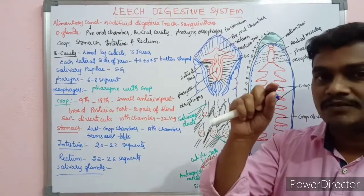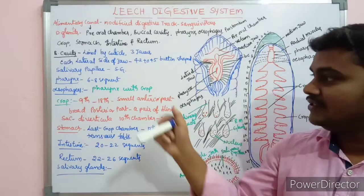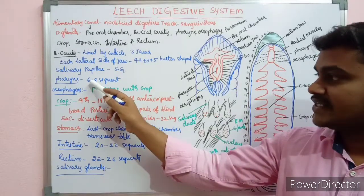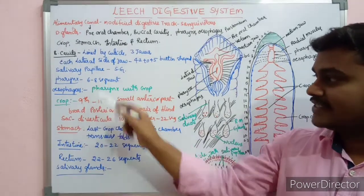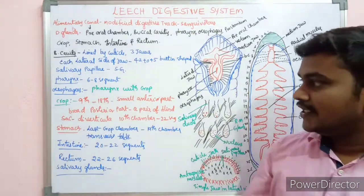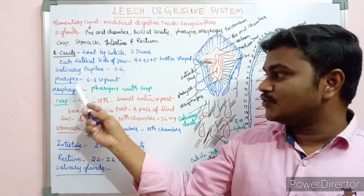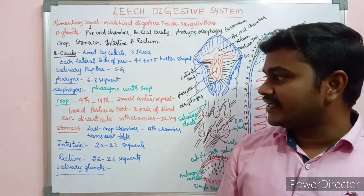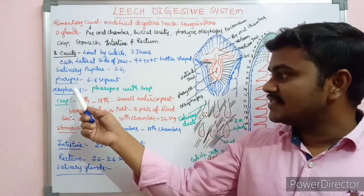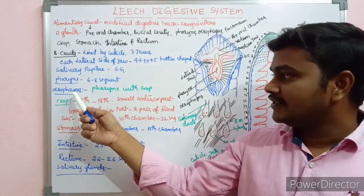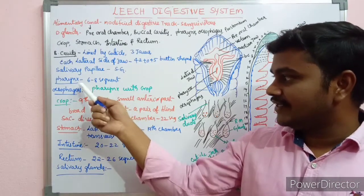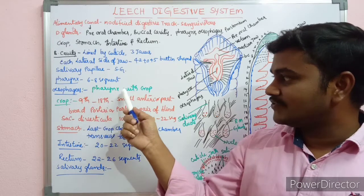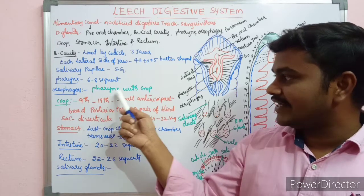The pharynx is a small, minute region. It is located in segments 6 to 8. The pharynx opens into the esophagus, which is also a small area.